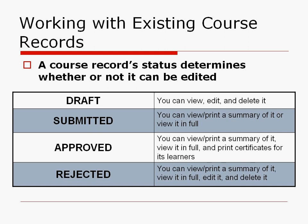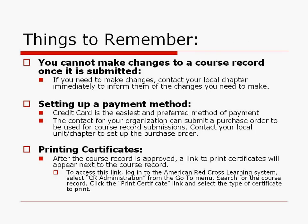The last status is rejected. If your course record has been rejected, you can still view and print in summary or in full, and you can also edit and delete it. A key thing to remember is that you can't make changes to your course record once it's submitted, so make sure all the information is correct before you enter it.